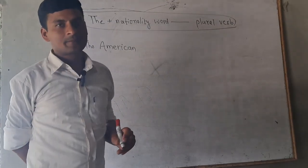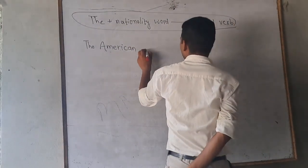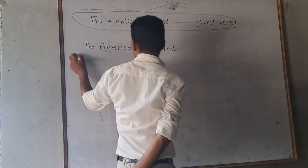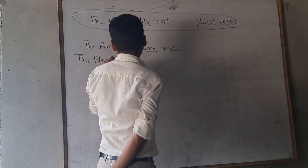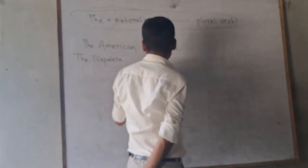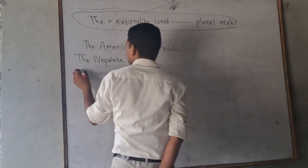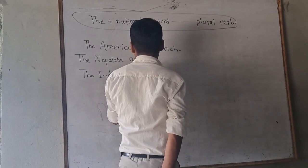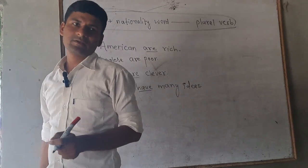The Americans, the Nepalese, the Chinese, the British - the Americans are rich. The Nepalese are poor. The Indians are clever. The Chinese have many ideas.